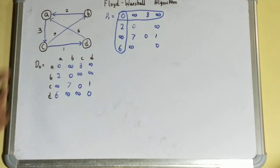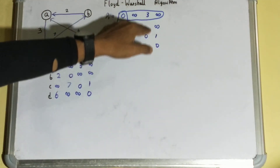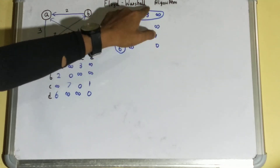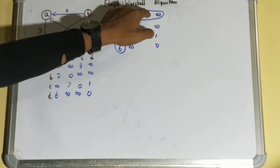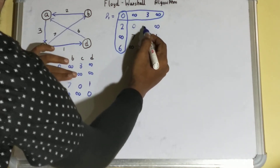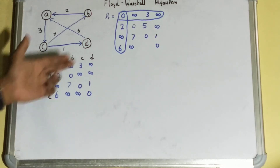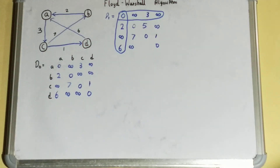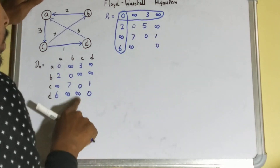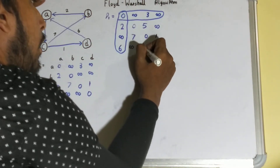For values we cannot copy — because there is no infinity in their row or column — we compute them. For example, second row, third column: we add the second row element and third column element from the circled row/column — two plus three equals five. The old value was infinity, so five is smaller and we replace it. Similarly, six plus three equals nine, and the old value was infinity, so we keep nine. That gives us our D1 matrix.